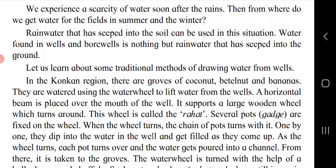We experience scarcity of water soon after the rains. In summer and winter we get water for fields from rivers and artificial dams. Rainwater that has seeped into the soil can be used — water found in wells and bore wells is nothing but rainwater that has seeped into the ground. If we store rainwater, it gets absorbed into the ground and raises the groundwater level, which can then be accessed by pumps or hand pumps in summer and winter.